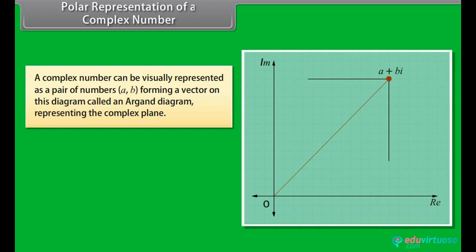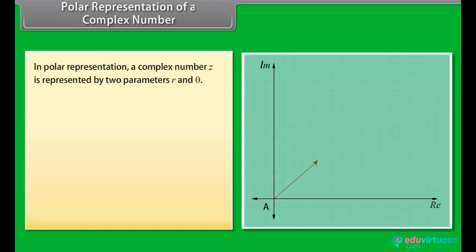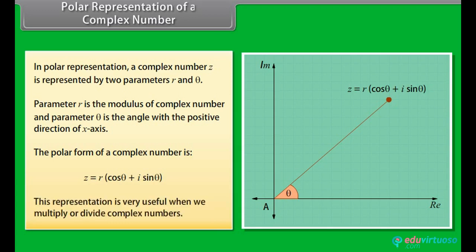Polar representation of a complex number. A complex number can be visually represented as a pair of numbers (A, B), forming a vector on the Argand diagram representing the complex plane. RE is the real axis, IM is the imaginary axis, and iota is the imaginary unit satisfying iota squared equals minus 1. In polar representation, a complex number Z is represented by two parameters R and theta — R is the modulus and theta is the angle with the positive x-axis. The polar form is Z equals R times (cos theta plus iota sin theta), which is very useful when multiplying or dividing complex numbers.